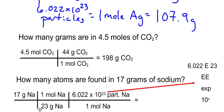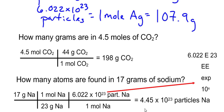So it's going to be 17 divided by 23, times 6.022 EE23. And your answer should look like this: 4.45 times 10 to the 23rd particles, or atoms, of sodium. Okay?